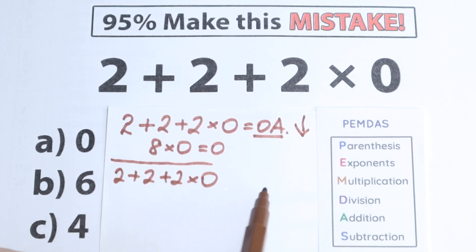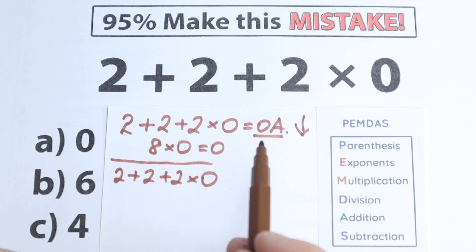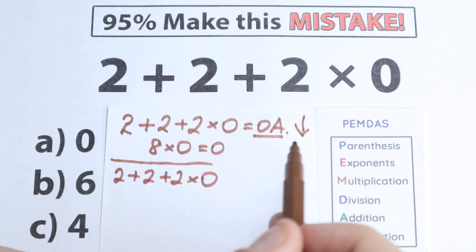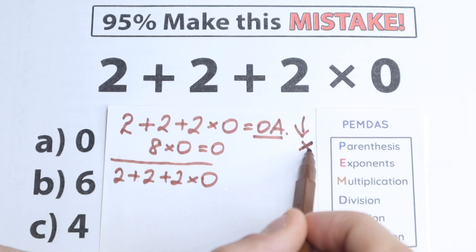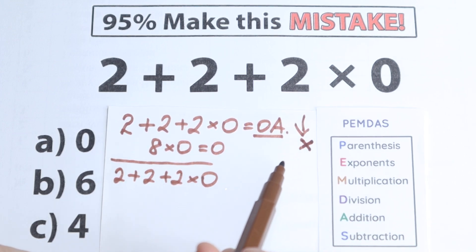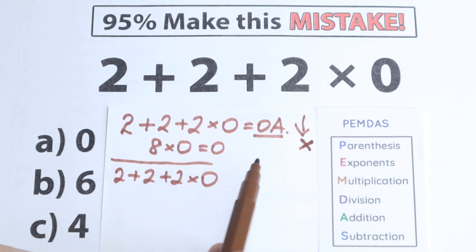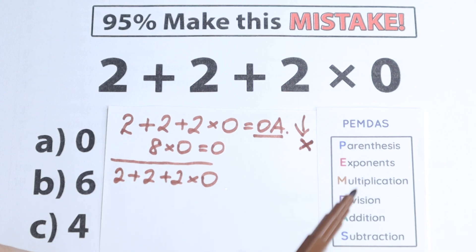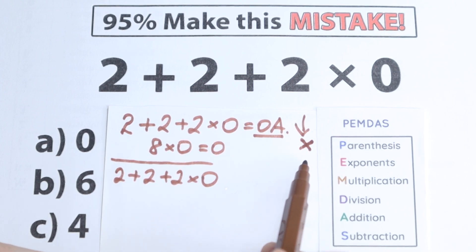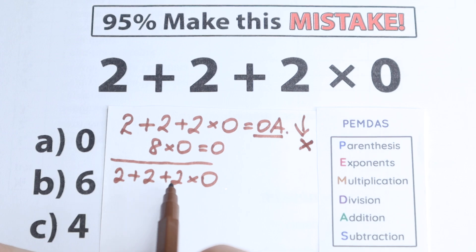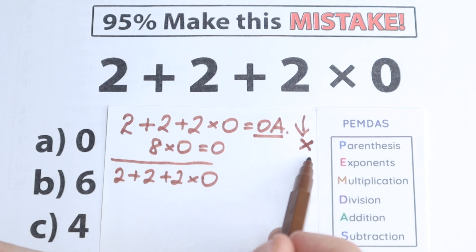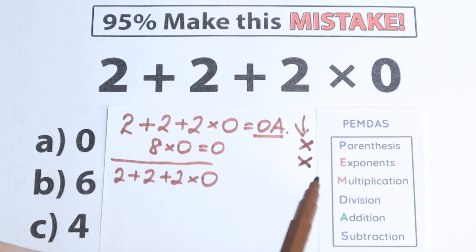The first step according to PMDMC is parentheses. We need to scan — where do we have parentheses? I don't see any parentheses, so we can easily skip this part. The next step is exponents. Where do we have any power? We don't have any power here, so we can easily skip this part as well. We've already skipped two parts.